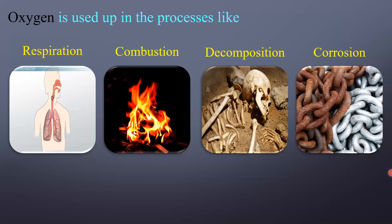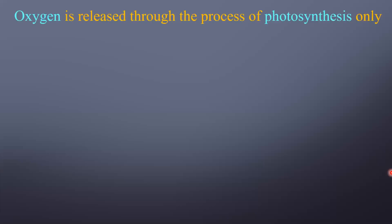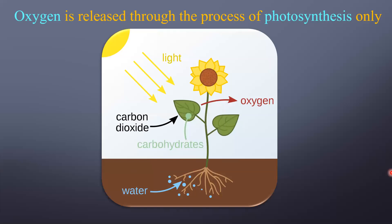Corrosion is only possible in the presence of oxygen. So oxygen is used up in four processes: respiration, combustion, decomposition, and corrosion. Let everyone repeat: oxygen is used up in respiration, combustion, decomposition, and corrosion.